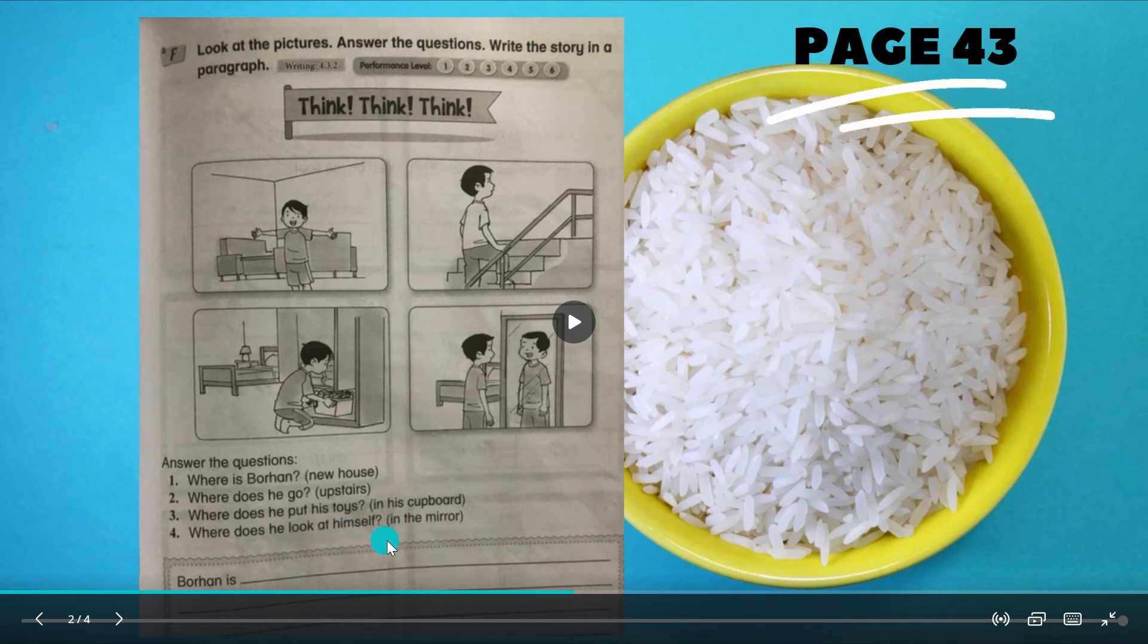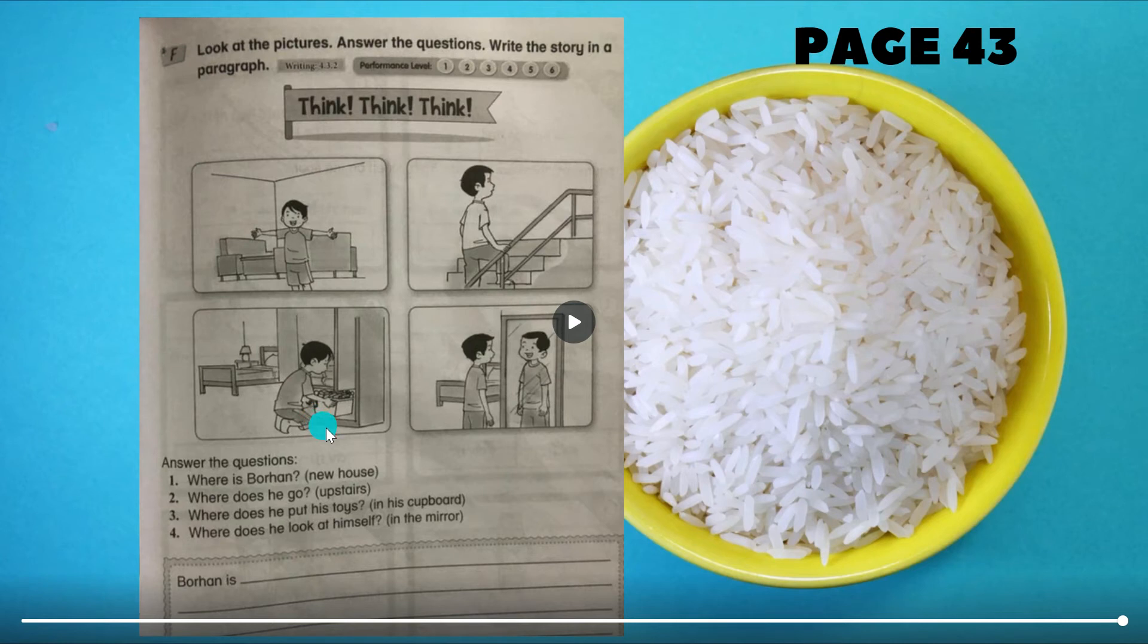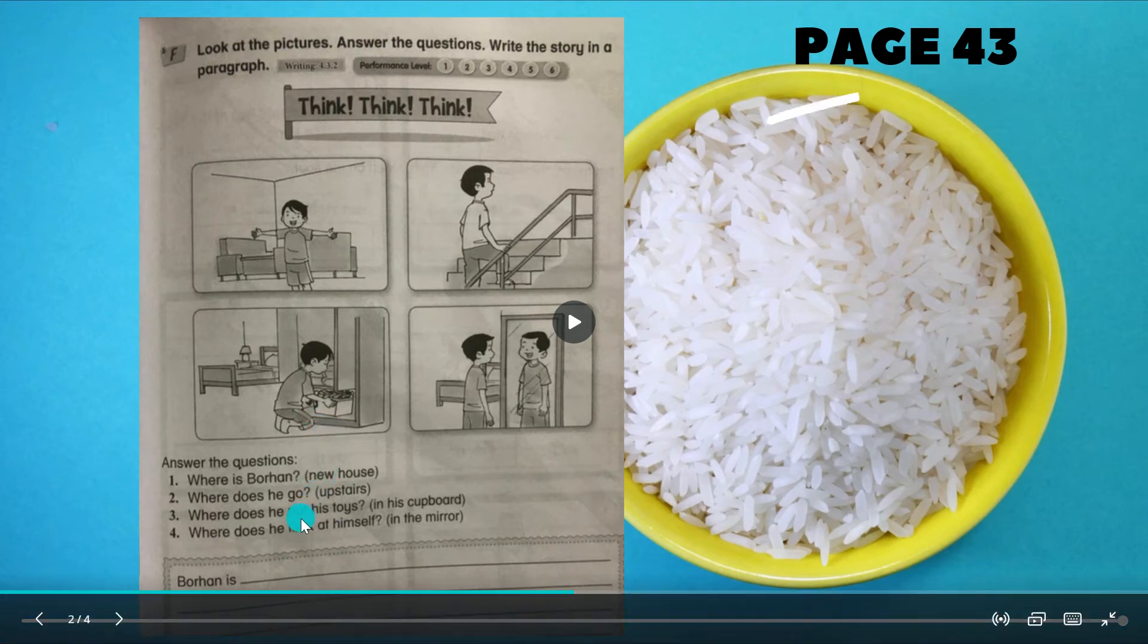Third question - where does he put his toys? Clue dia in his cupboard, dalam almari dia. So dia simpan toys dia, mainan dia, dalam almari lepas main. Macam mana ayat dia? He puts - p-u-t ada es - he puts his toys in his cupboard.